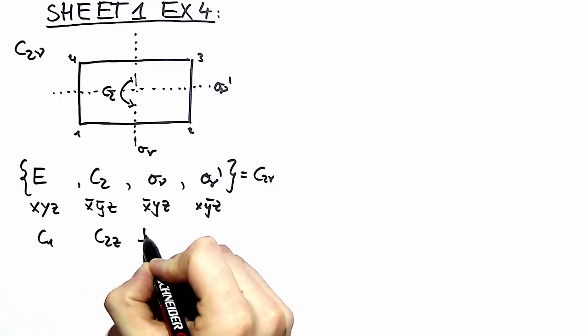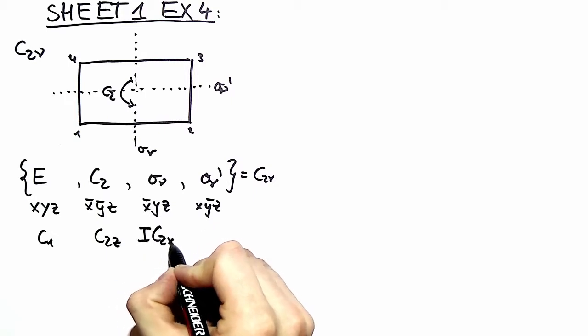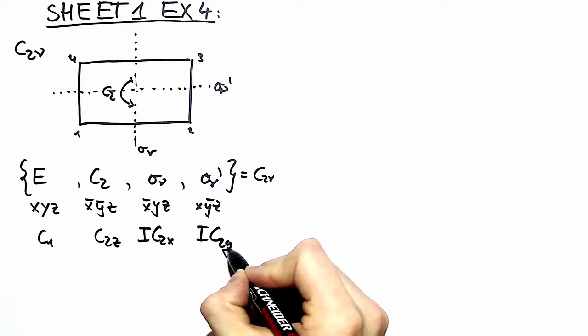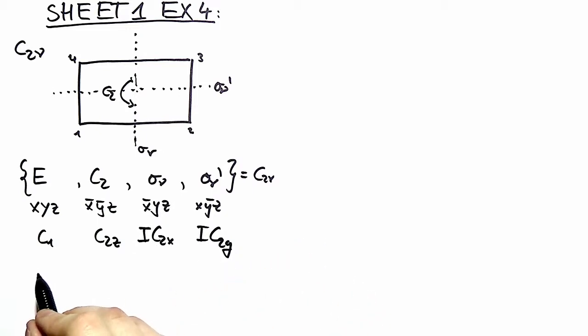C2Z, I, C2X, C2Y. Of course we weren't able to do that in exercise 2 because the situation wasn't quite that obvious.